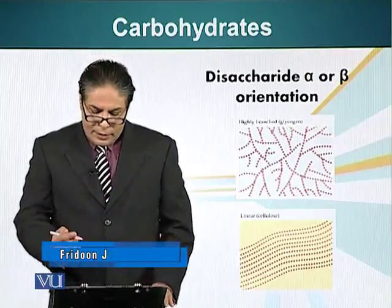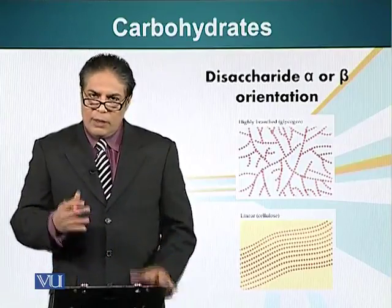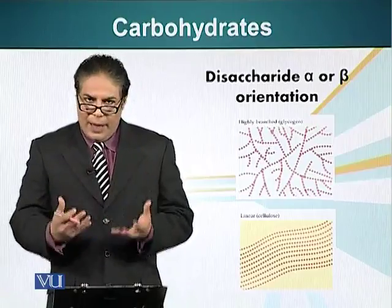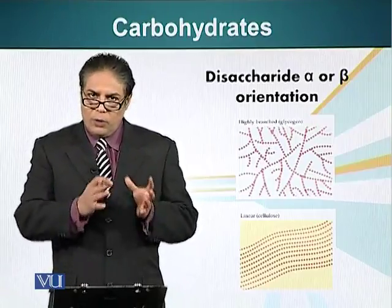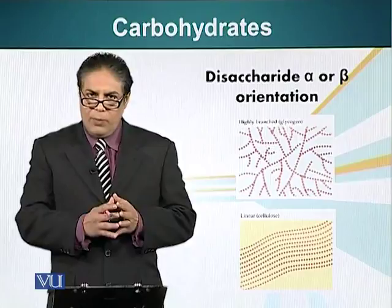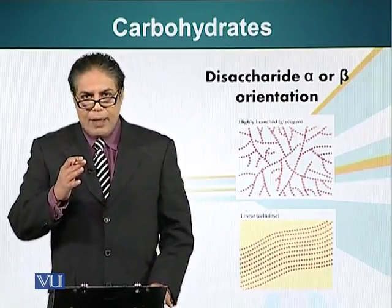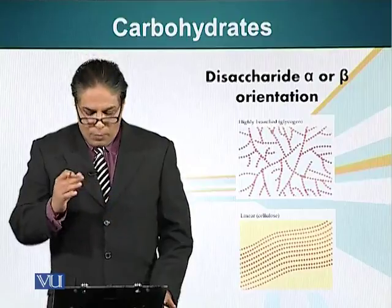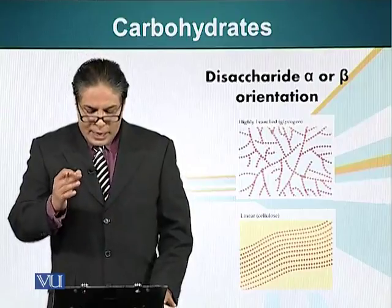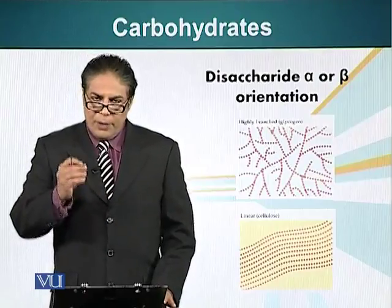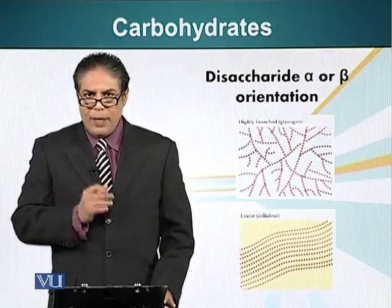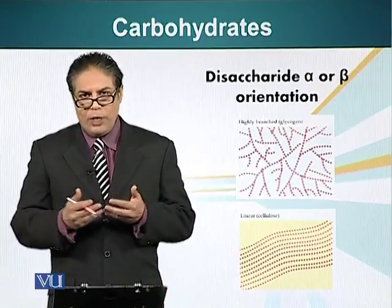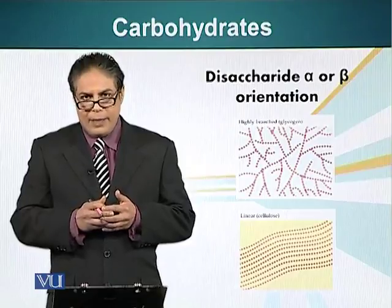For example, starch or glycogen, a molecule which animals and plants use to store glucose, has glucose molecules linked in alpha configuration. Whereas cellulose, a material which is present in wood, has glucose molecules linked in beta bond.